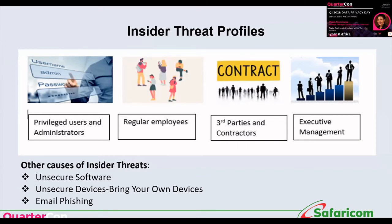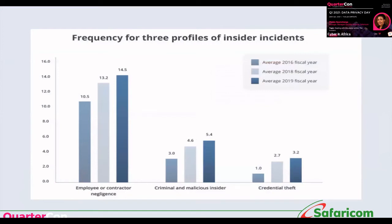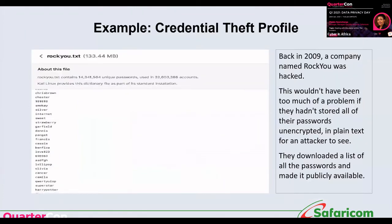In terms of the frequency of insider threats across the three profiles, employee and contractor incidents have been rising at a rate of 8% to 10%. It is important to note that the 2020-2021 report, once released, will likely show the number has gone even higher — to about 33%.